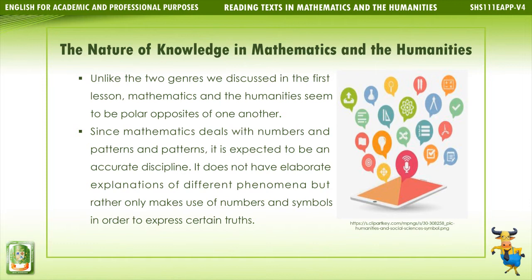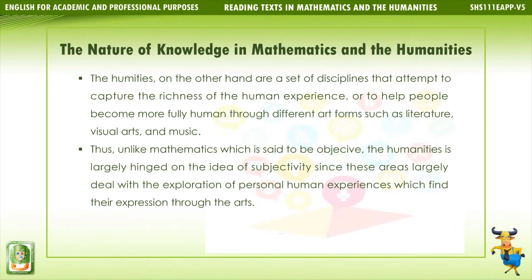Mathematics does not have elaborate explanations of different phenomena, but rather only makes use of numbers and symbols in order to express certain truths. The humanities, on the other hand, are a set of disciplines that attempt to capture the richness of the human experience, or to help people become more fully human through different art forms such as literature, visual arts, and music. Thus, unlike mathematics — which is said to be objective — the humanities is largely hinged on the idea of subjectivity, since these areas deal with the exploration of personal human experiences which find their expression through the arts.